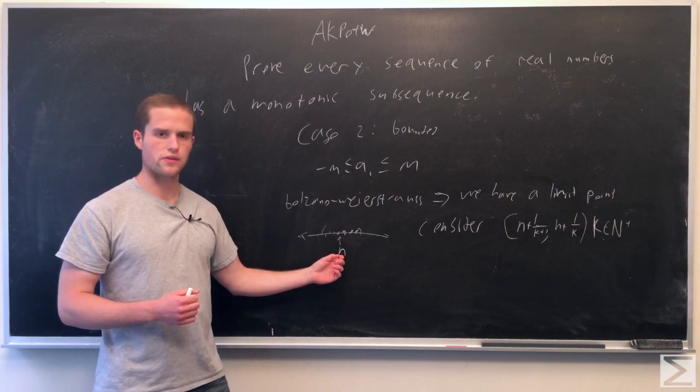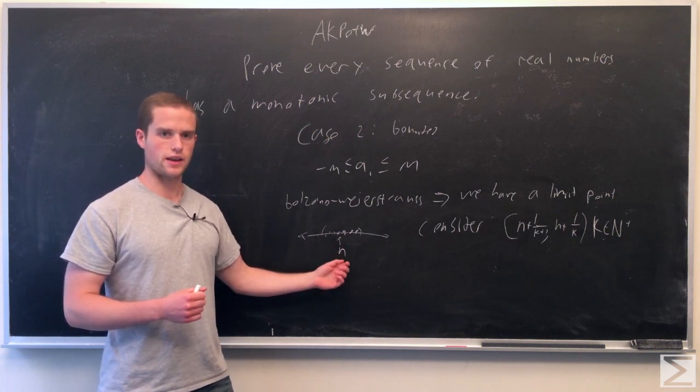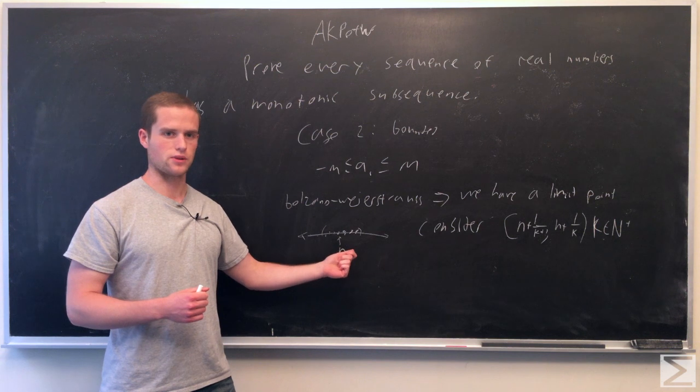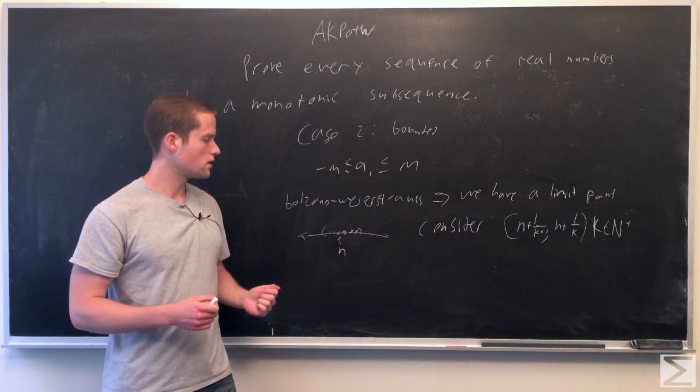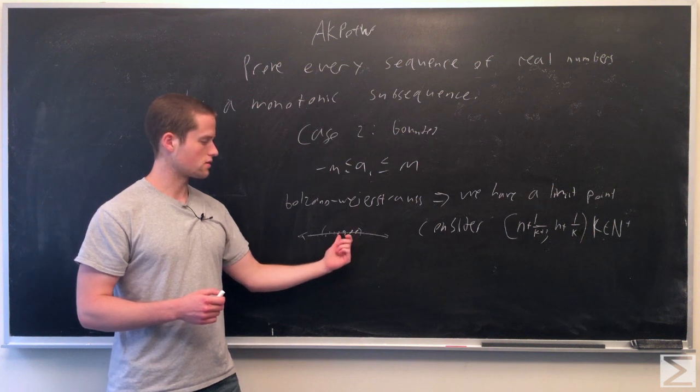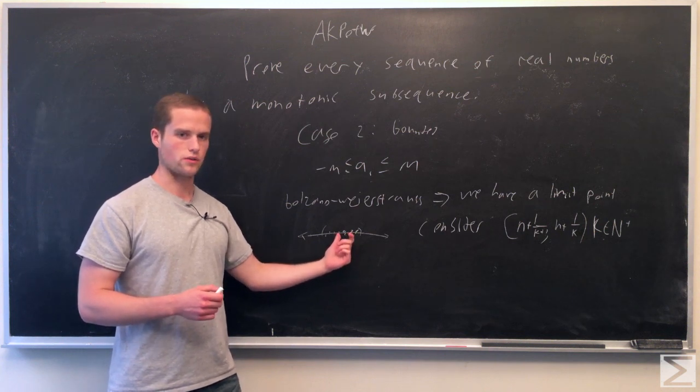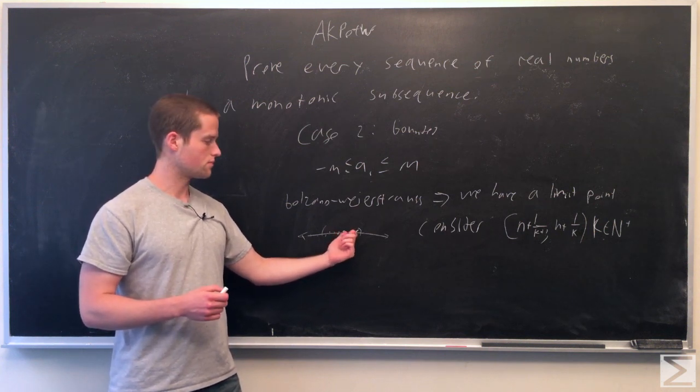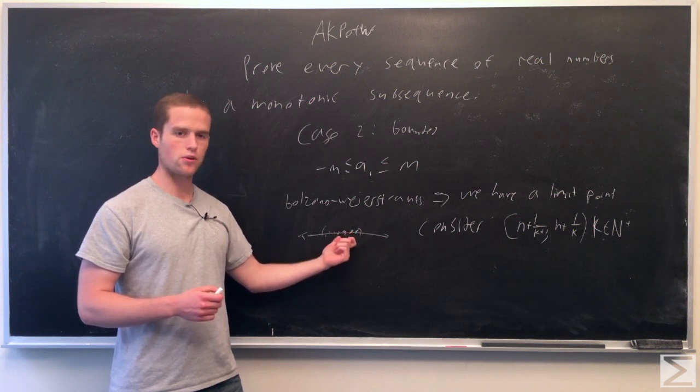Also assume we do not have infinite points taking n. If we have infinite points taking n, we right there have a monotonic sequence, just a constant sequence. So now we have finite points taking the value of n, infinite points greater than n, and also infinite points in any neighborhood of n.